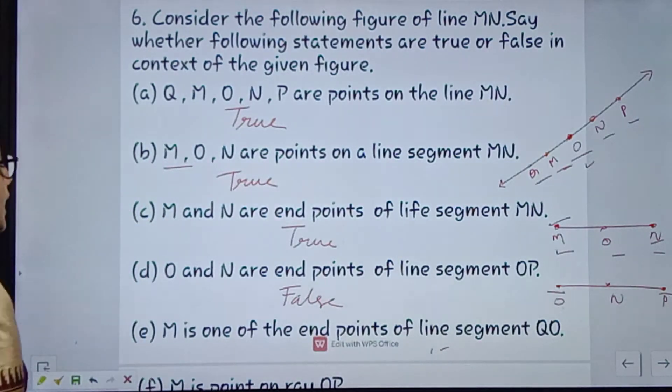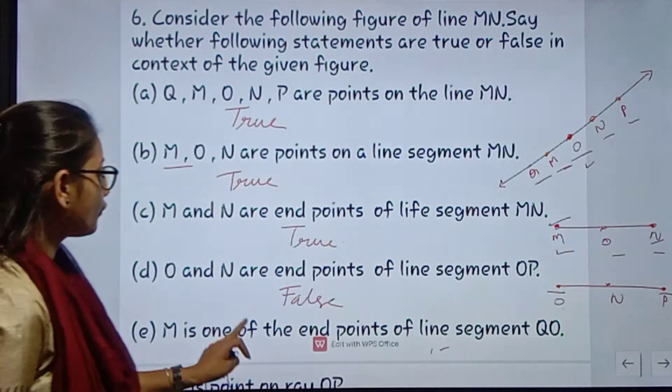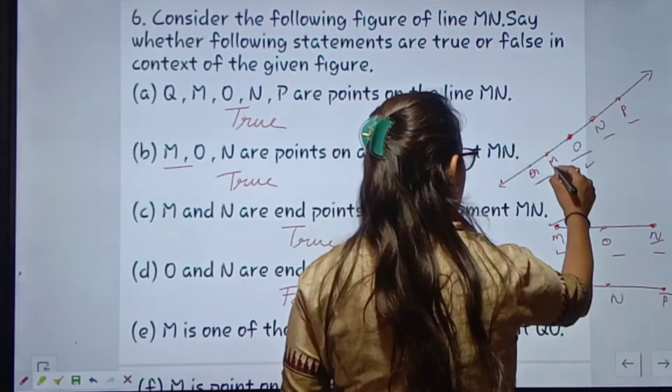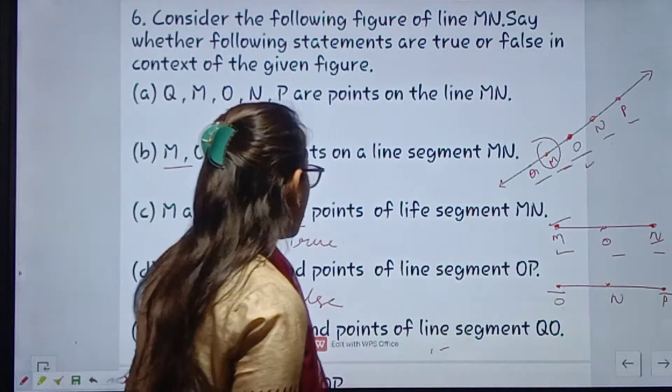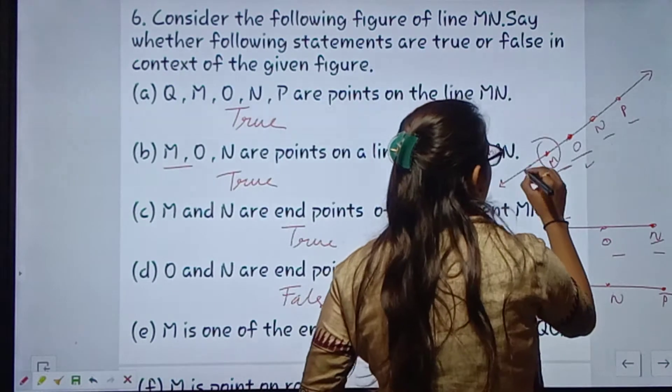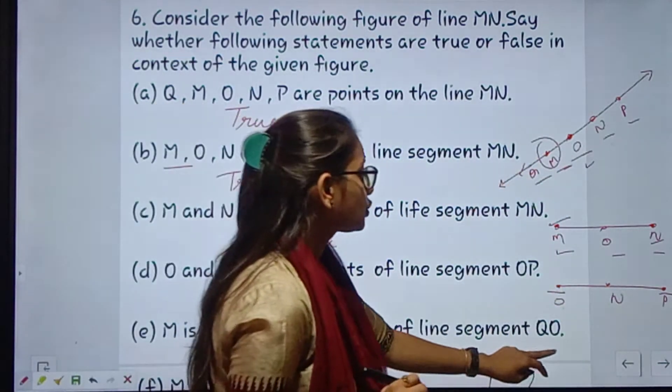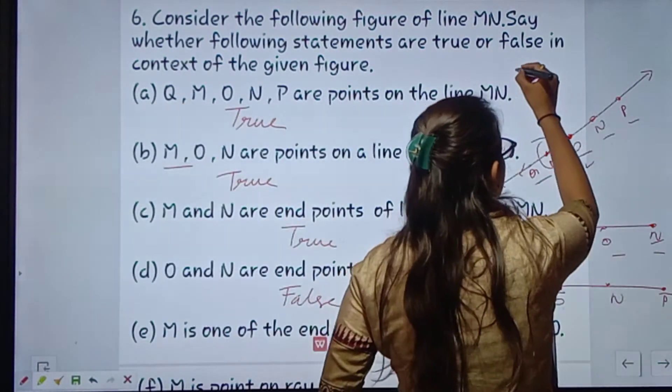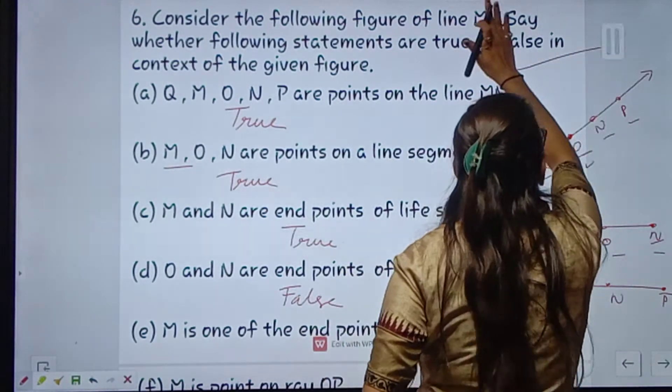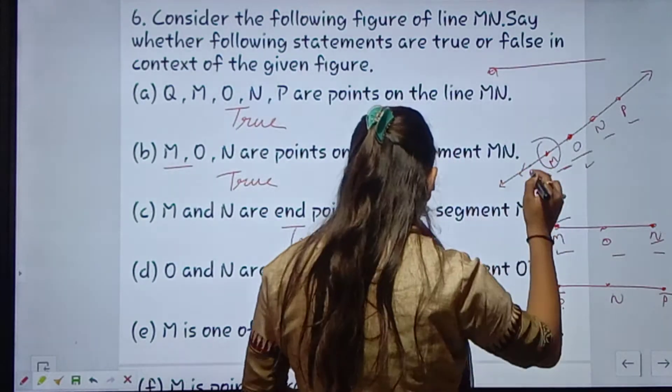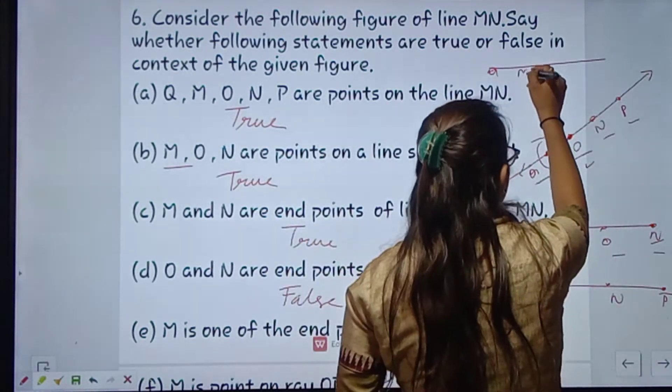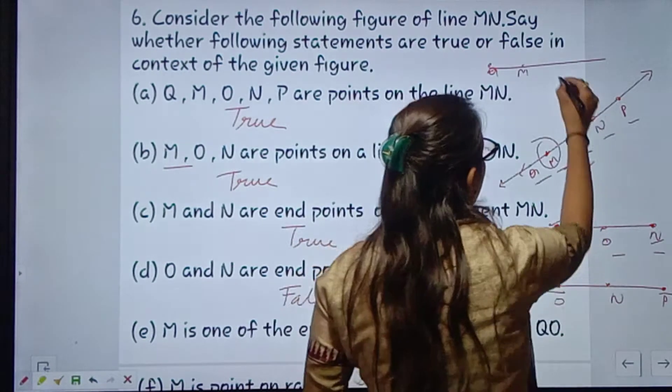Next is M is one of the endpoints of line segment QO. M yeh raha, M is one of the endpoint - yeh endpoint hona hai bita. End point toh Q hai na. Line segment QO - ye figure aise draw ho raha hai: Q, M, and O.